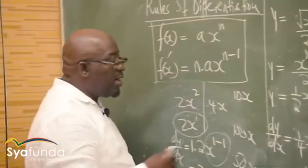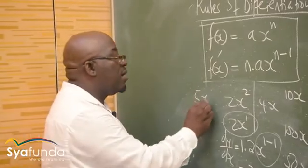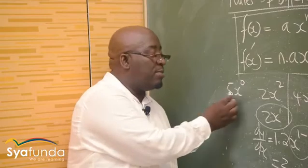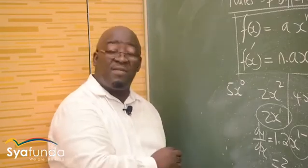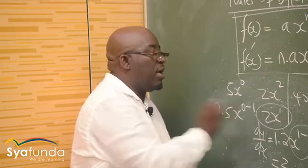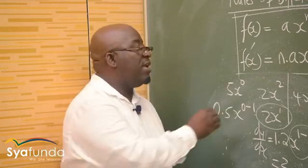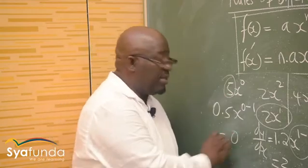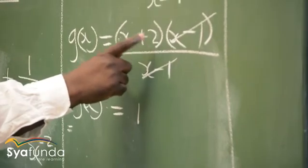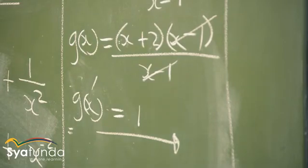For a constant like 5: write it as 5x⁰. Differentiate: 0 × 5 · x^(−1) = 0. So the derivative of any constant is 0. Therefore g'(x) = 1 + 0 = 1. That is our actual value, which is what evaluating means.